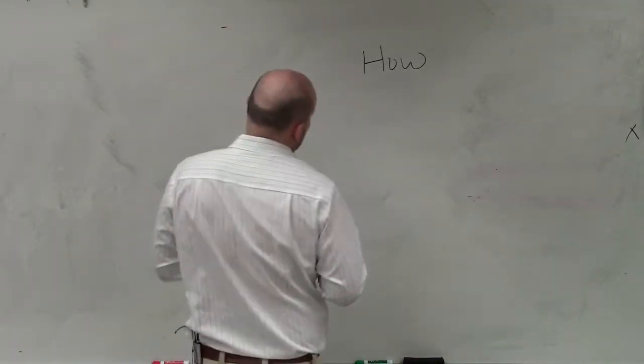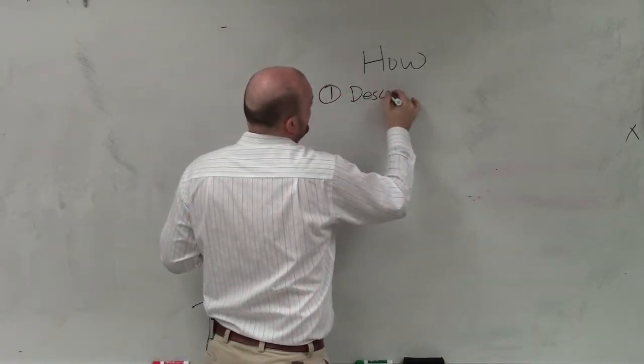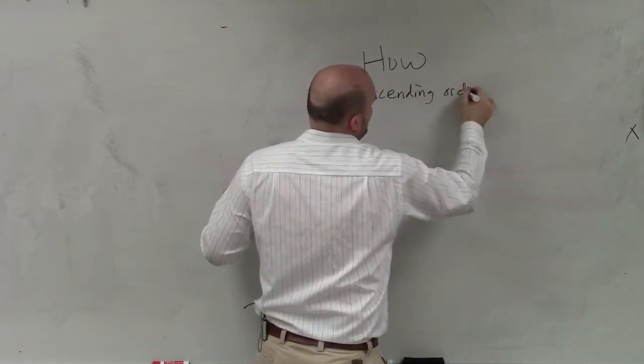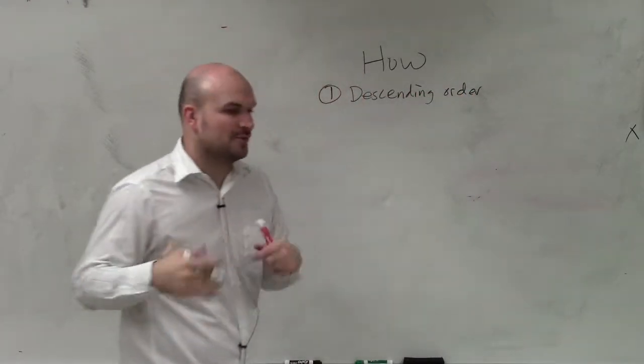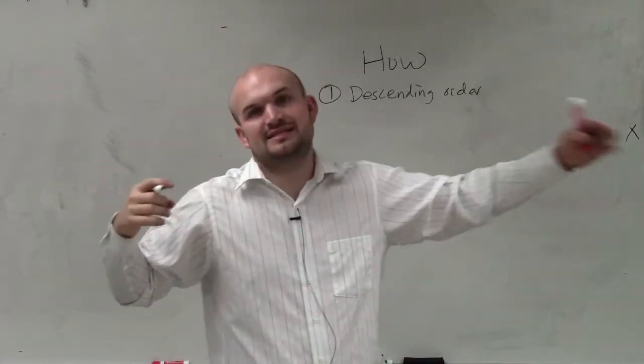Basically, how to determine end behavior comes in a couple steps. First, we want to make sure we write our polynomial in descending order. Remember, descending order is when we write a polynomial with the largest power, which is the degree of the polynomial, and then go down into descending powers.